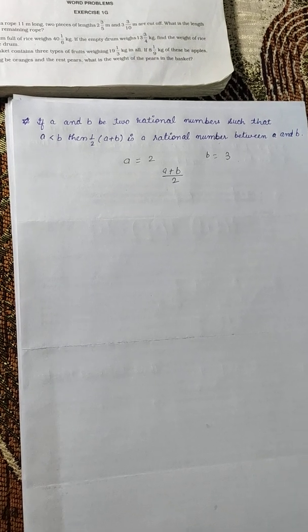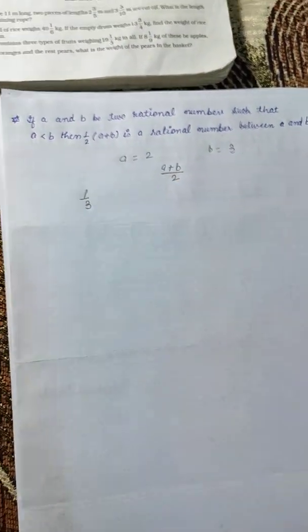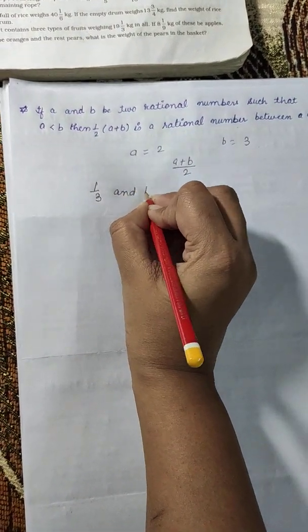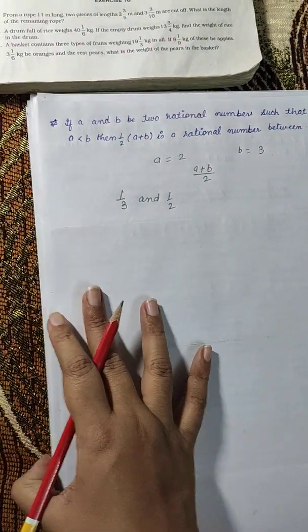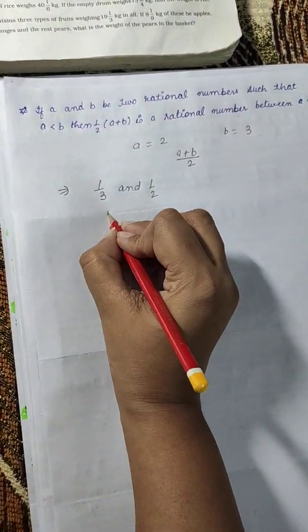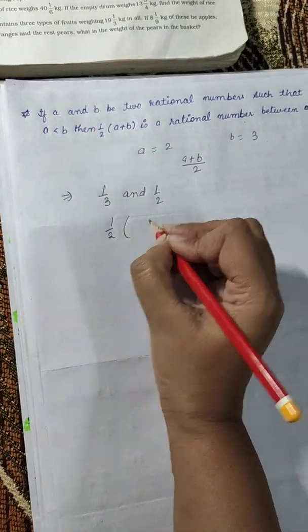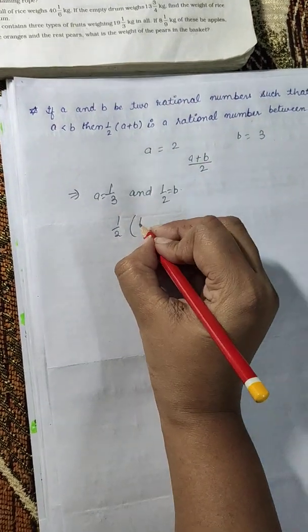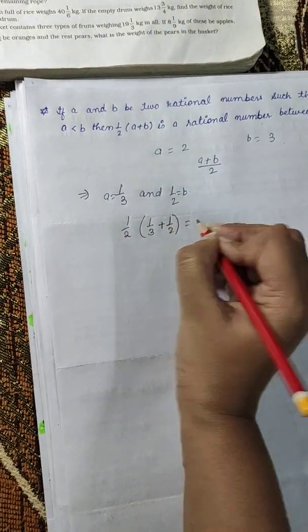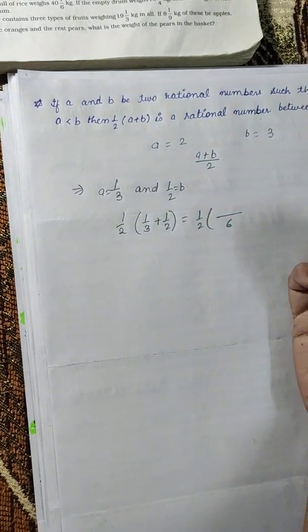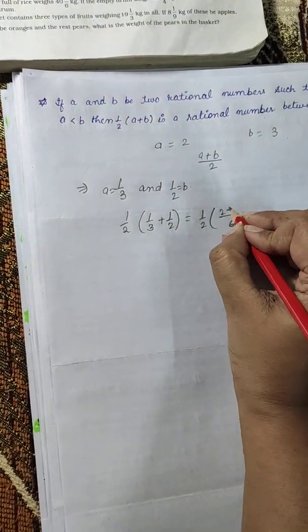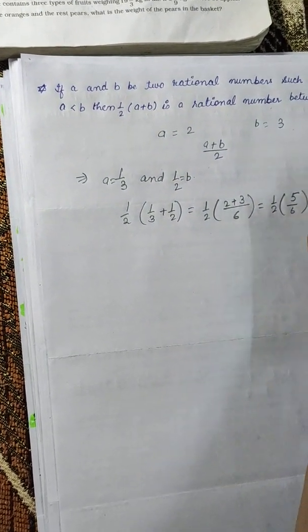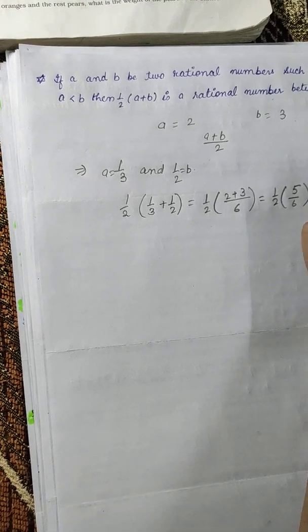The first example is: find a rational number between 1/3 and 1/2. Here a equals 1/3 and b equals 1/2. So we compute half of (1/3 + 1/2). Taking the LCM, we get (2 + 3) / 6, which gives 5/6. Then multiplying by 1/2 gives 5/12.